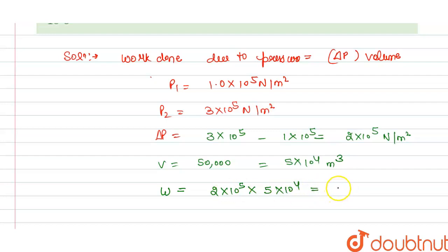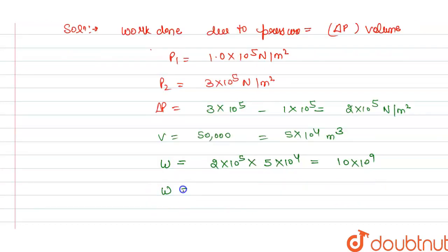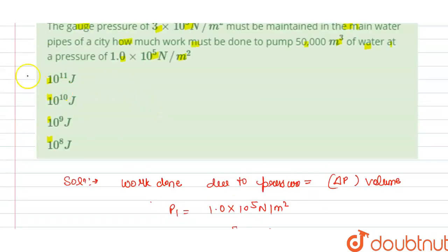5 and 2 is 10, and this is 10^9, so we get work done is 10^10 joules. This is the answer for the question. Now we check which option is correct here, so our option B is correct. Thank you.